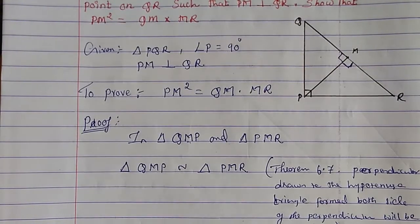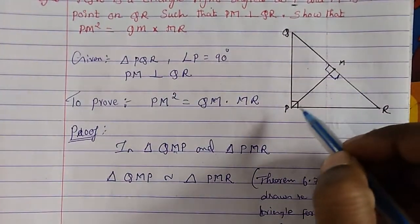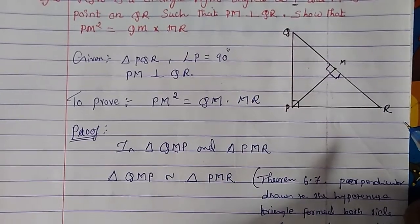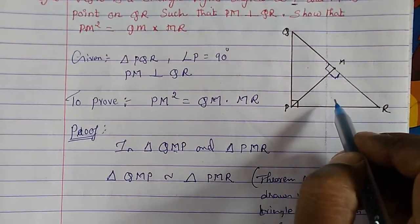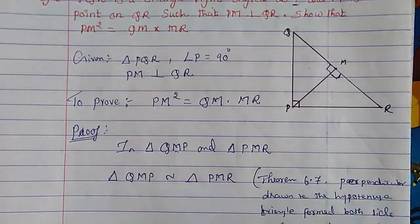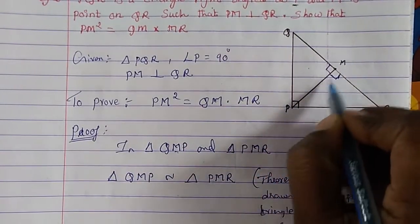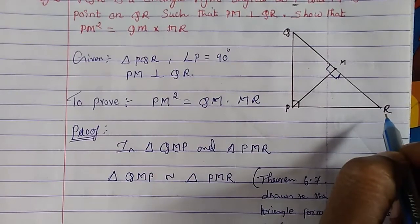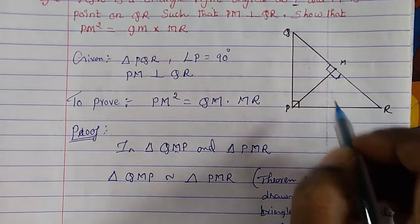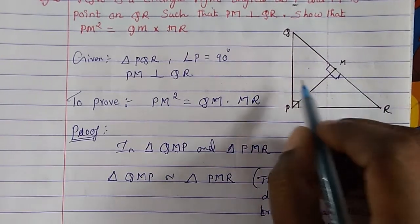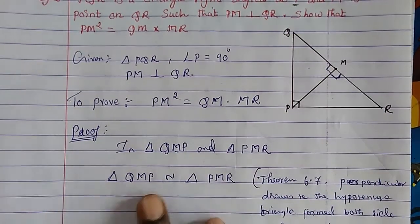You can write the theorem in your own words — you don't need to memorize it exactly. Since PM is perpendicular to the hypotenuse QR in right triangle PQR, by Theorem 6.7 the two triangles formed are similar. Therefore the ratio of their corresponding sides will be equal.